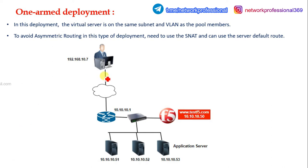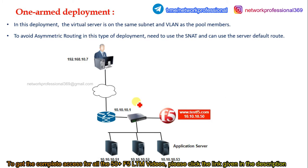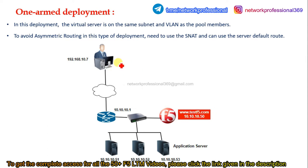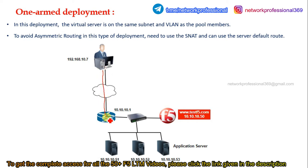We have a sample virtual server configured in F5 at www.testf5.com. When a user wants to access this web application, after DNS resolution it will give the IP address 10.10.10.50, which is the virtual IP address. Once the user gets the virtual server's IP address, the request comes through the network, goes through the router, and reaches the F5.